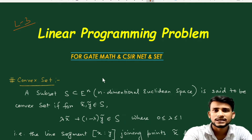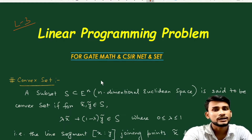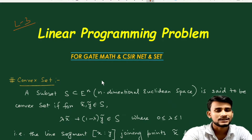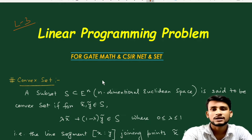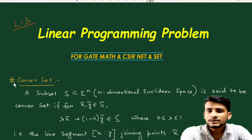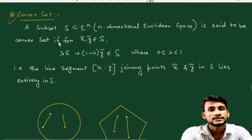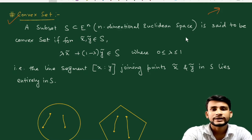The GATE syllabus is already covered within the CSIR NET syllabus and any state-level SET examination syllabus. For CSIR NET, there are only questions from the graphical method, which we already covered in this lecture series. In this lecture, we will cover convex sets and extreme points, including examples and some theorems. I've already covered two lectures and will share the links in the description.